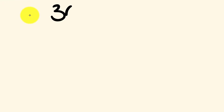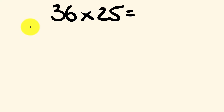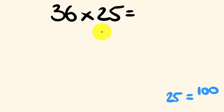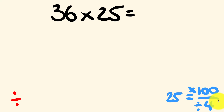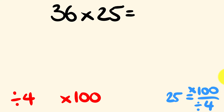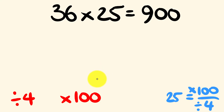Let's multiply 36 by 25. I'll start with why this works. We're multiplying by 25, and 25 is equal to 100 divided by 4. So we divide by 4 and then multiply by 100. So 36 divided by 4 is equal to 9, and 9 times 100 is 900 — instantly.